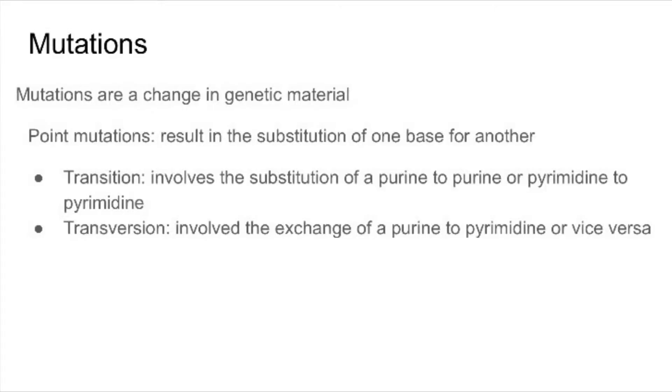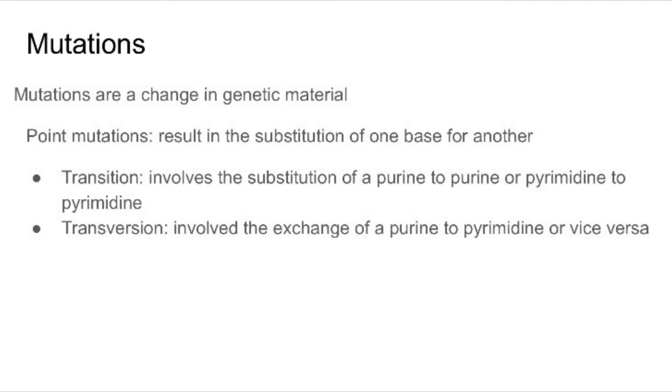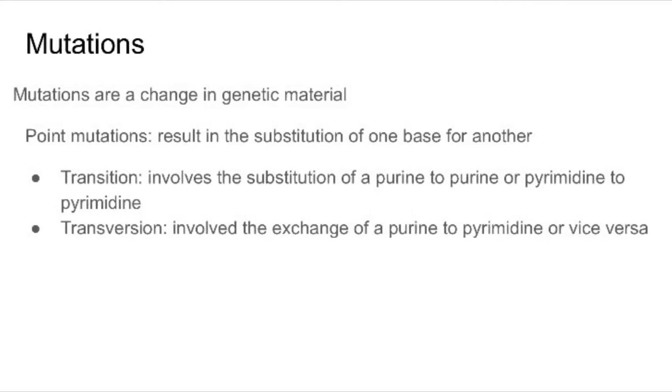Mutations are a change in genetic material. Point mutations result in the substitution of one base for another. Transition involves the substitution of a purine to purine or pyrimidine to pyrimidine. Transversions, however, are the exchange of purine to pyrimidine or vice versa.